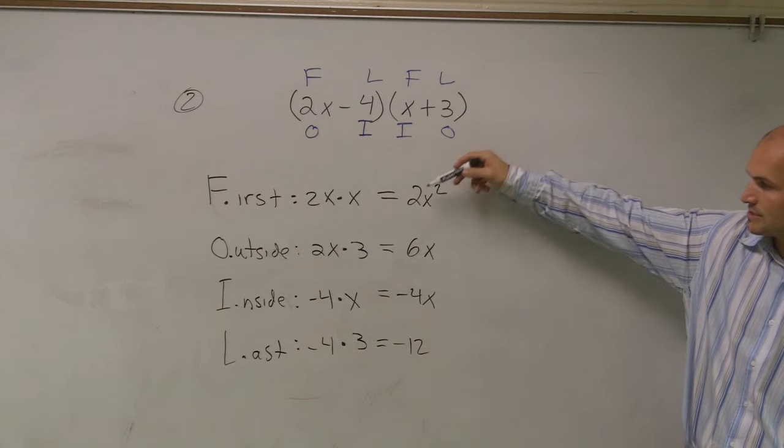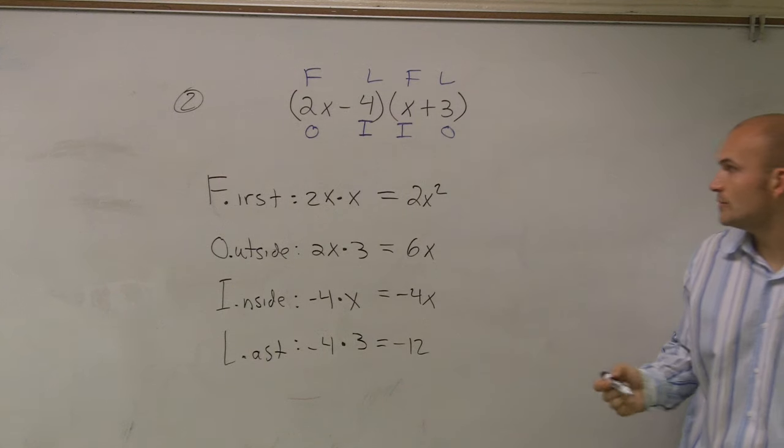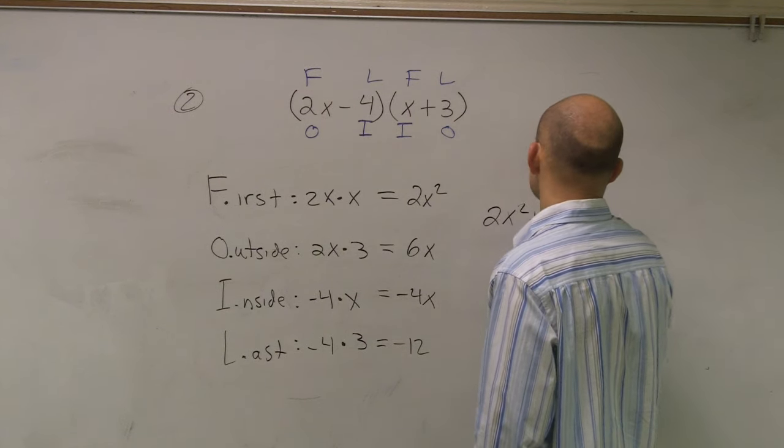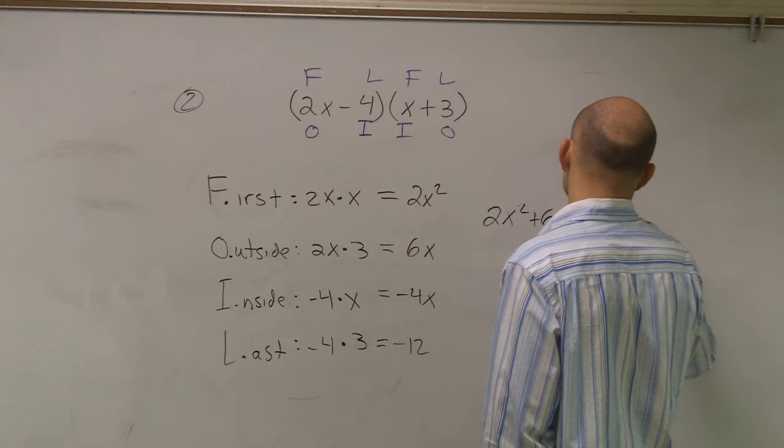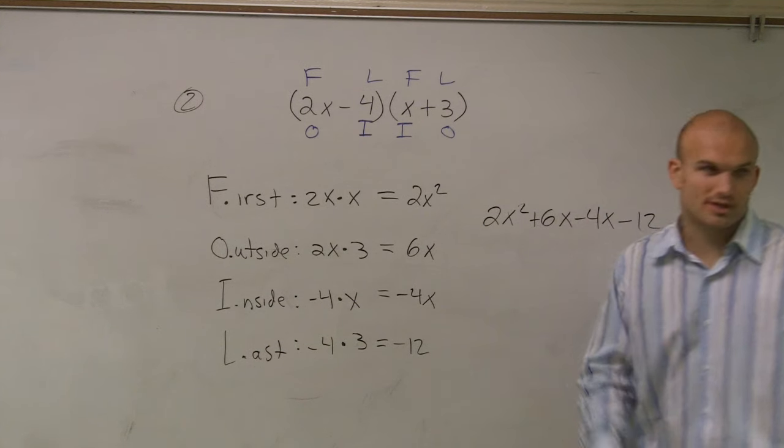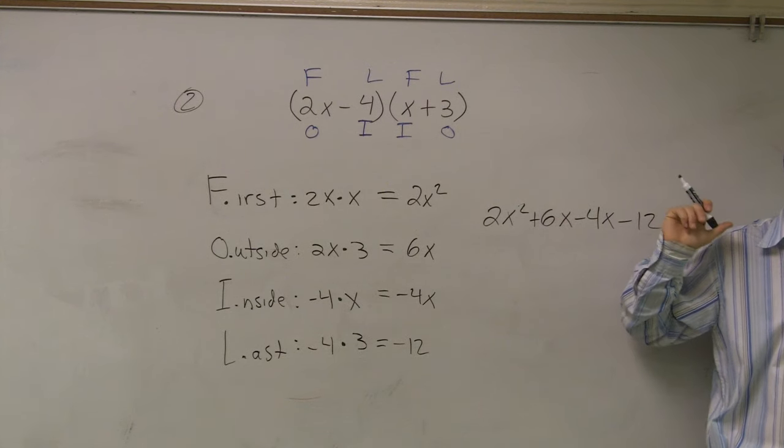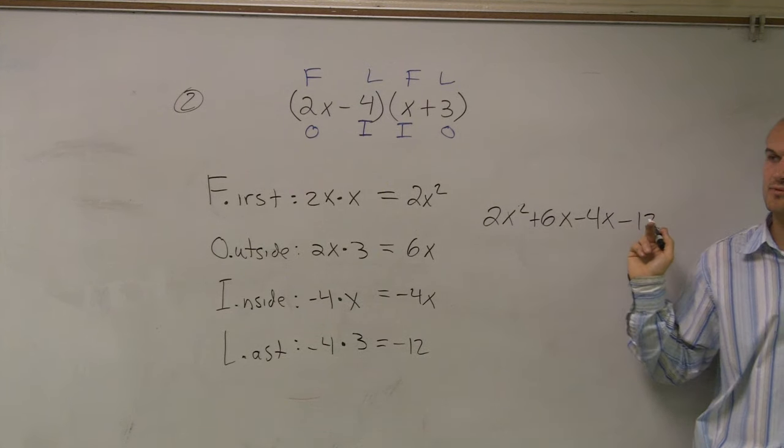OK, so now what I can do is rewrite the answer as 2x squared plus 6x minus 4x minus 12. Notice how I wrote it in standard form. Just getting used to always writing it in standard form. Your highest exponent is always first. Your constant is going to be last.